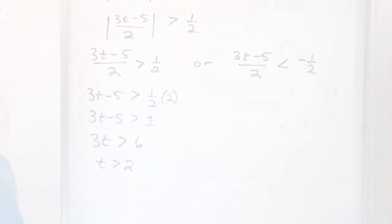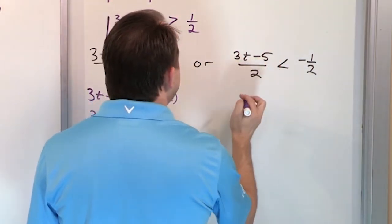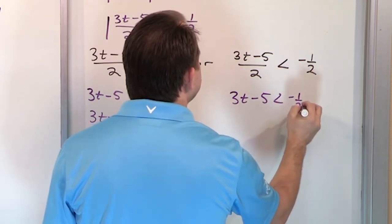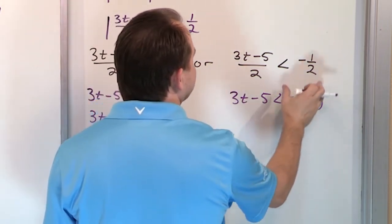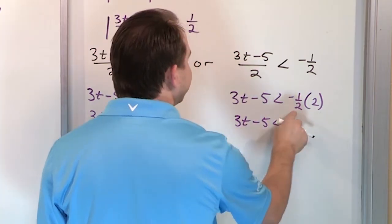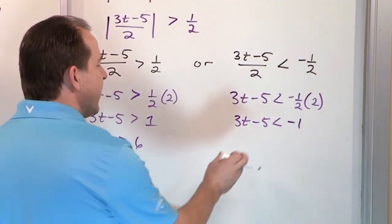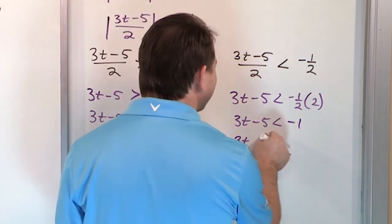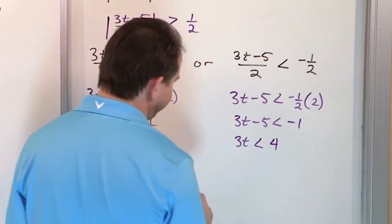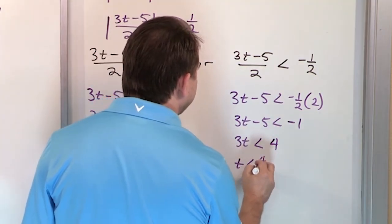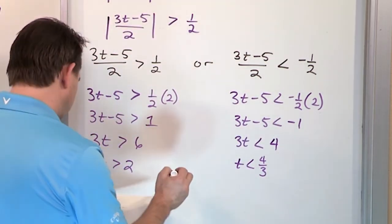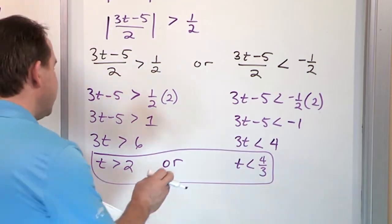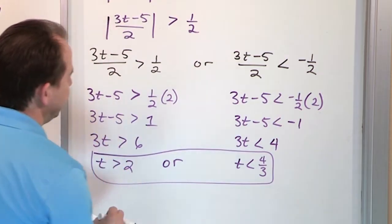Now we do the similar thing on the other side: (3t minus 5) over 2 less than negative 1 half. Multiply the left by 2 — that cancels it, leaving 3t minus 5. Multiply the right by 2: negative 1 half times 2 is negative 1. Then add 5: negative 1 plus 5 gives you 4. Divide by 3: t is less than 4 thirds. These are joined by an 'or,' so the answer is t greater than 2 or t less than 4 thirds.